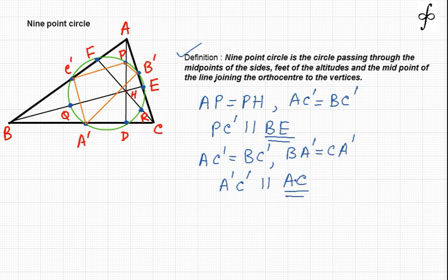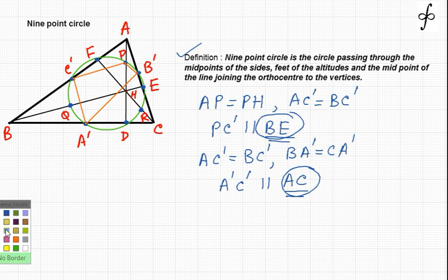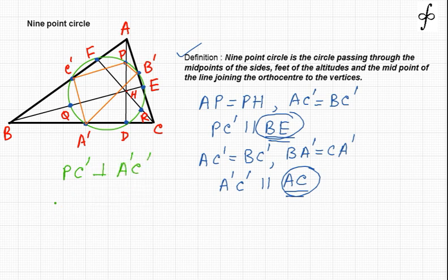Now PC dash is parallel to BE and A dash C dash is parallel to AC. BE and AC are perpendicular to each other because BE is the altitude on AC, so BE is perpendicular to AC. Therefore PC dash and A dash C dash, being parallel to these respectively, must also be a perpendicular pair of lines. So PC dash is perpendicular to A dash C dash, which implies that angle A dash C dash P must equal 90 degrees.